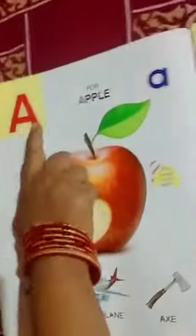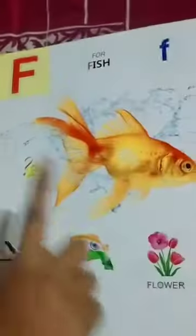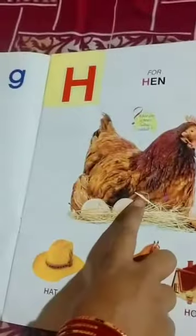A for apple. B for ball. C for cat. D for dog. E for elephant. F for fish. G for grapes. H for hen.